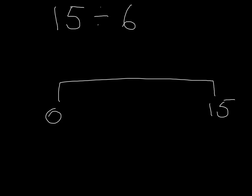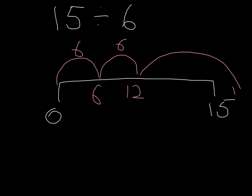Next, we chunk in groups of 6 up to 15. One group of 6. Another group of 6 makes 12. If we grouped another 6, that would make 18, and we would go over our 15 target.